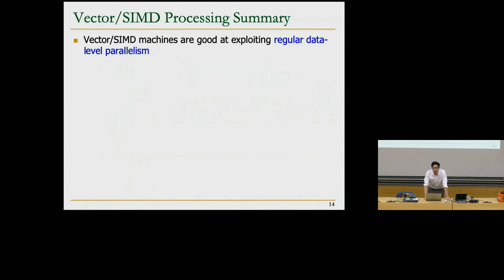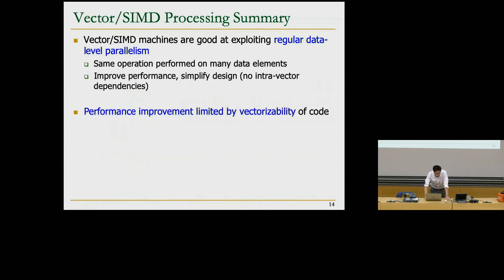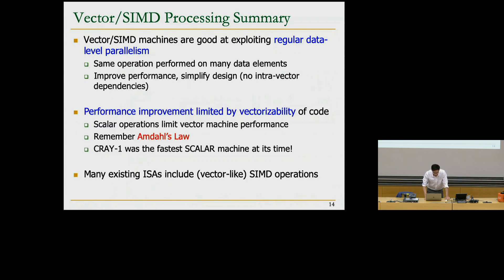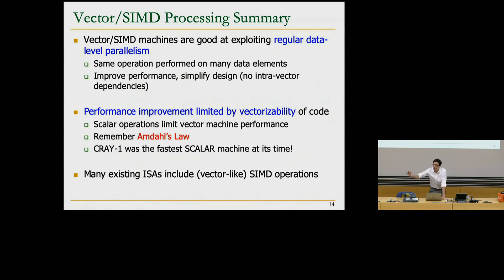To summarize SIMD processing: SIMD machines are very good for regular data parallelism, and we can get significant performance improvement by vectorizing code. However, Amdahl's law limits speedup — it won't be possible to vectorize everything. Real-world codes always have some sequential fraction that limits the maximum speedup from a vector machine.